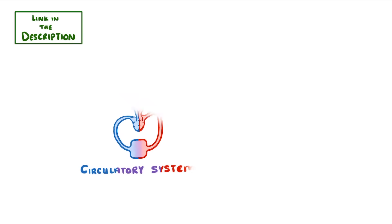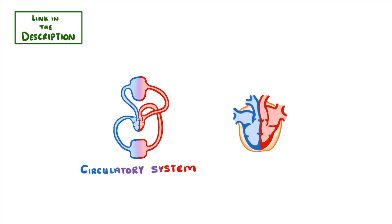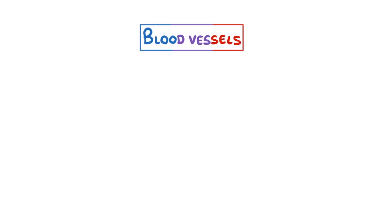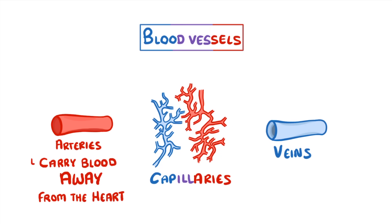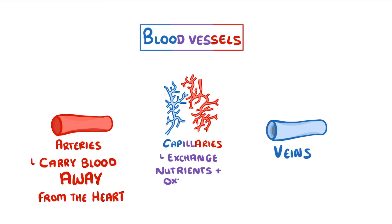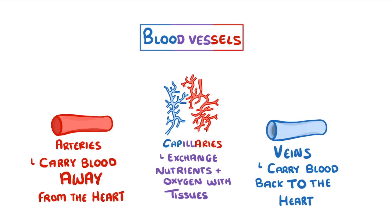In our last video, we introduced the circulatory system and saw how the heart acts as the system's pump. In this video, we'll take a closer look at the blood vessels, specifically the arteries, capillaries, and veins. To quickly summarise, the arteries carry blood away from the heart, the capillaries exchange nutrients and oxygen with the tissues, and the veins carry the blood back to the heart. As we take a closer look at each, the key thing to notice is how the structure of each type of vessel is related to its function.